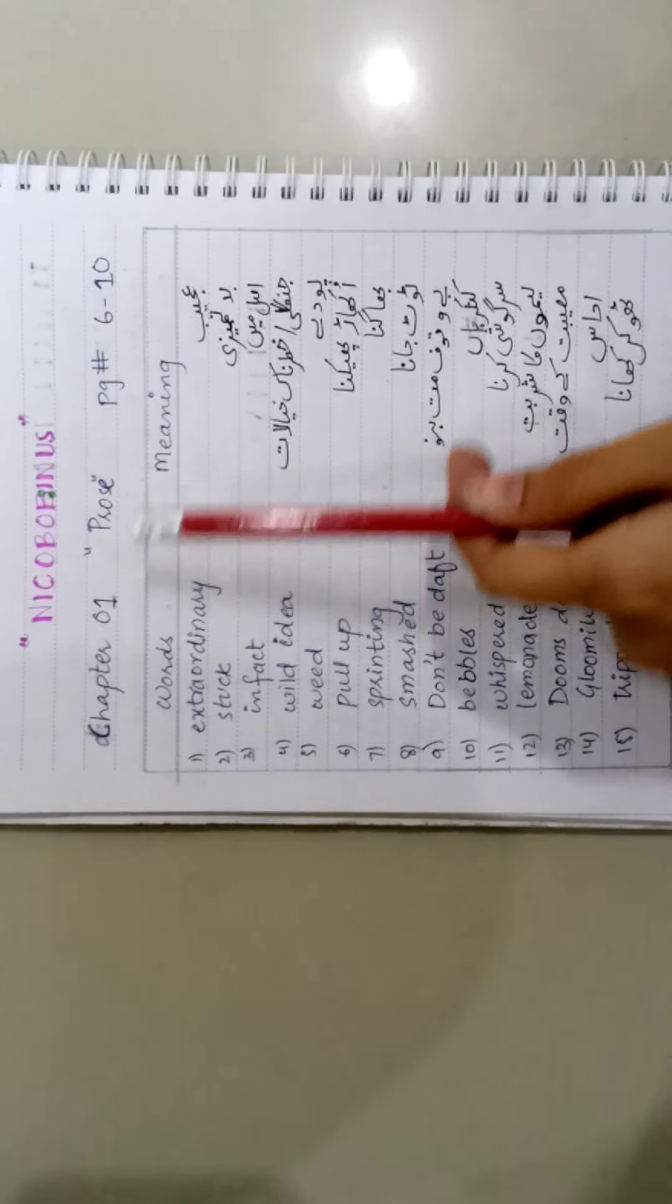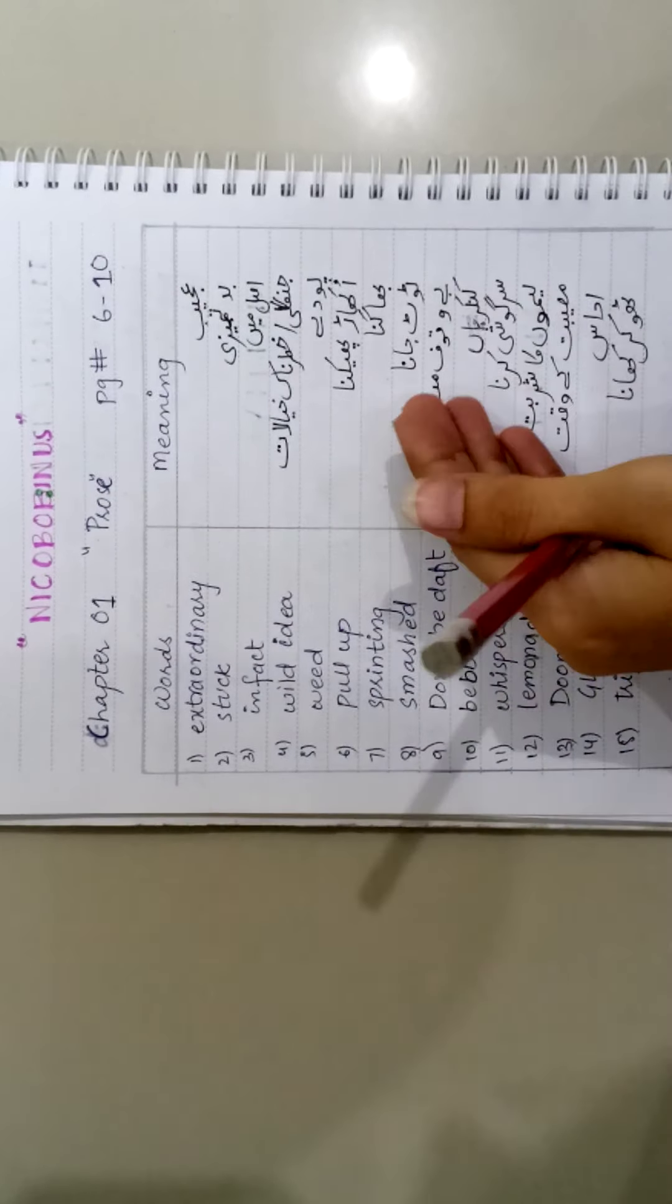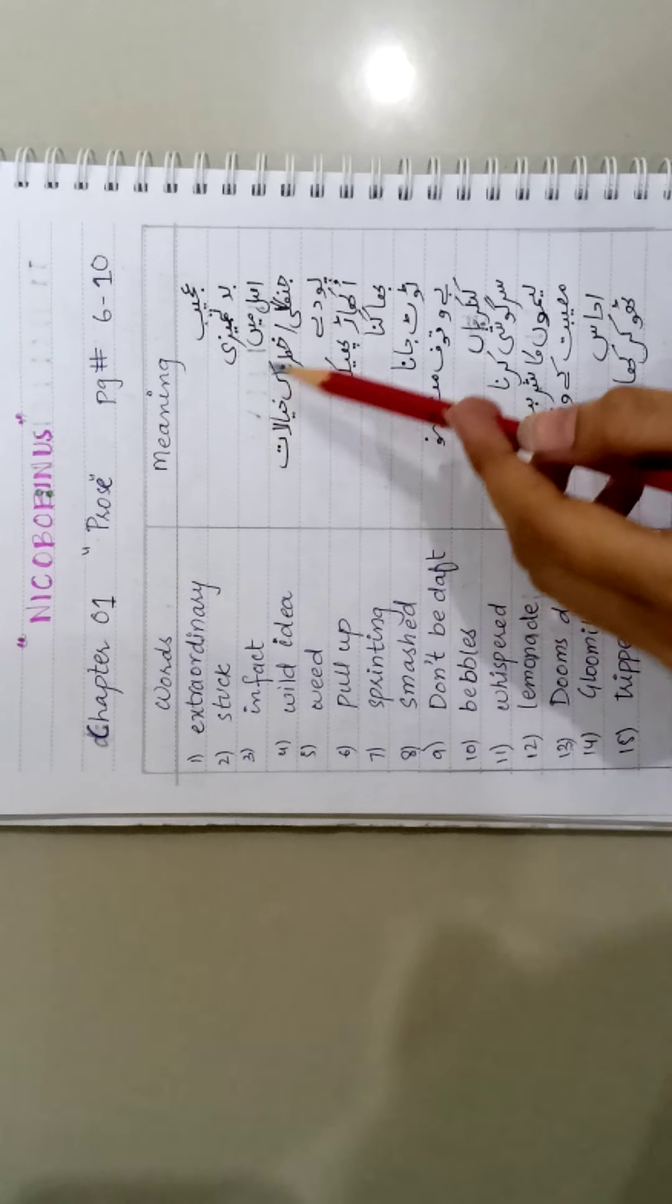Now you have to start your work. First of all, you have to make the title page of Nicobobinus, and then you will start copying down words meaning, words and synonyms and antonyms, and all the other exercises.